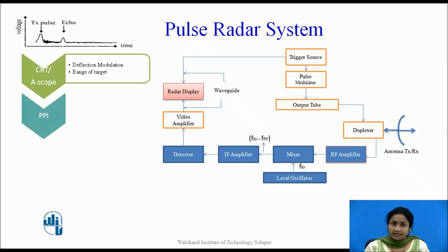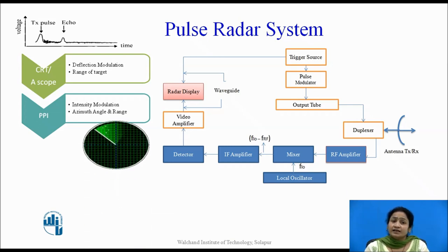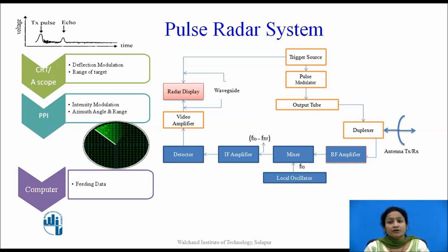The second radar display is the PPI — Plan Position Indicator. The PPI works on the principle of intensity modulation and is used to determine both the range and the azimuth angle of the target. It is represented in the form of a polar plot, where the radius represents the range and the intensity gives the angle. Another display system feeds data directly to a computer, which then displays the range and angle of the target.